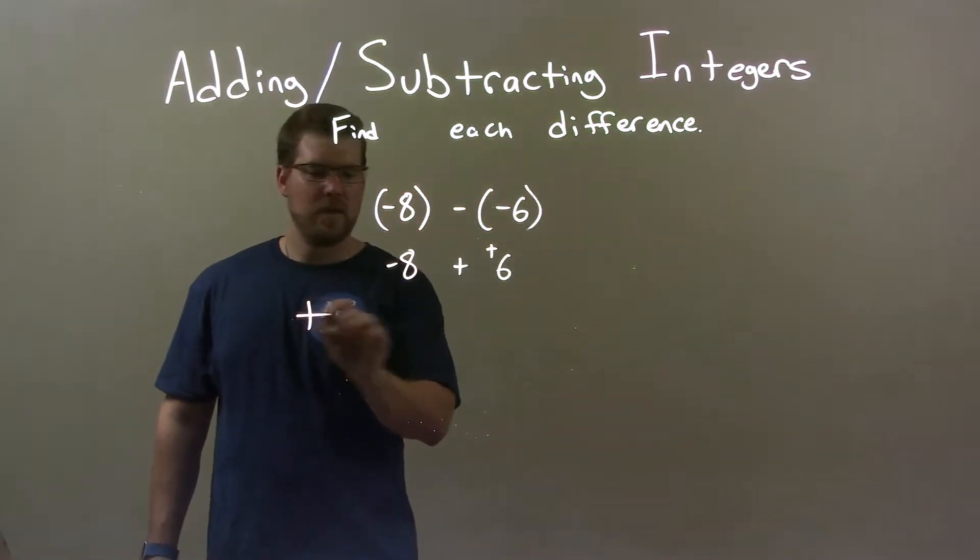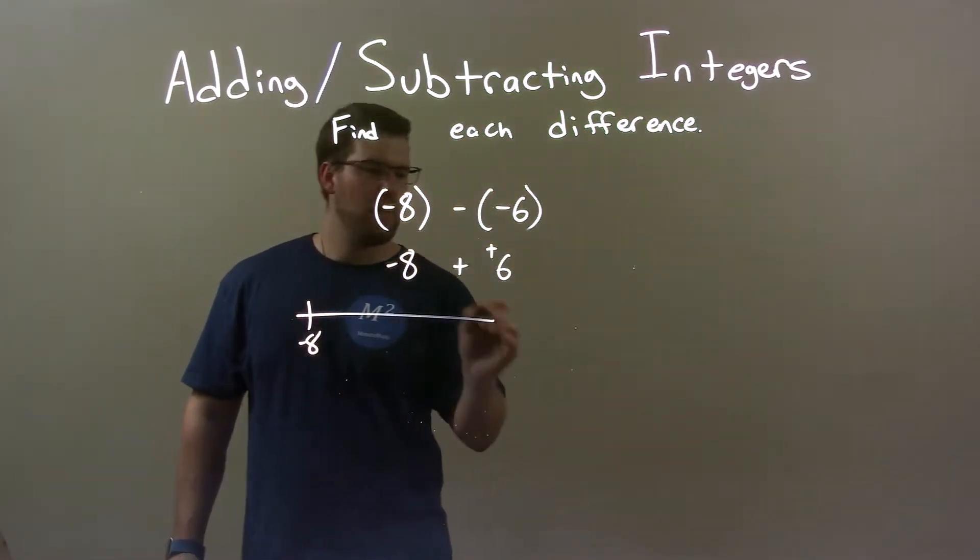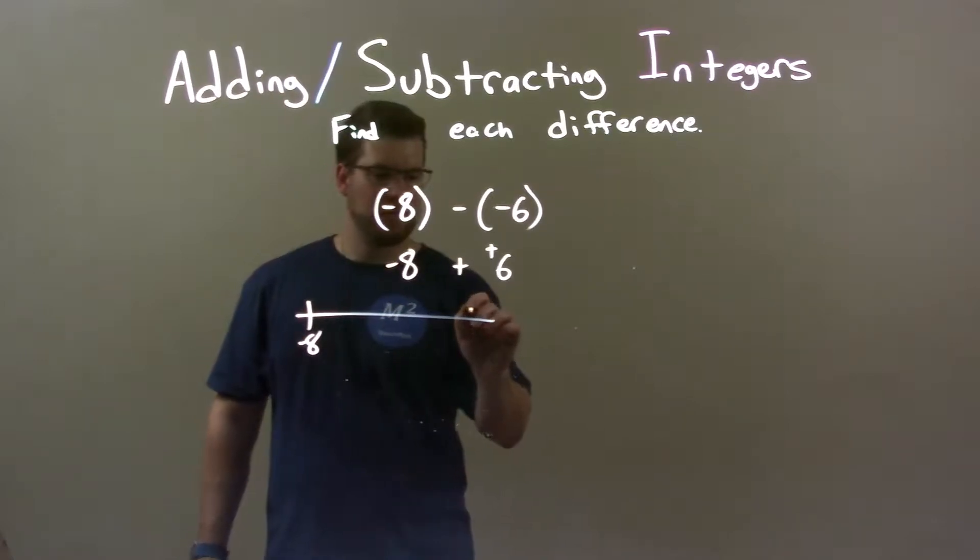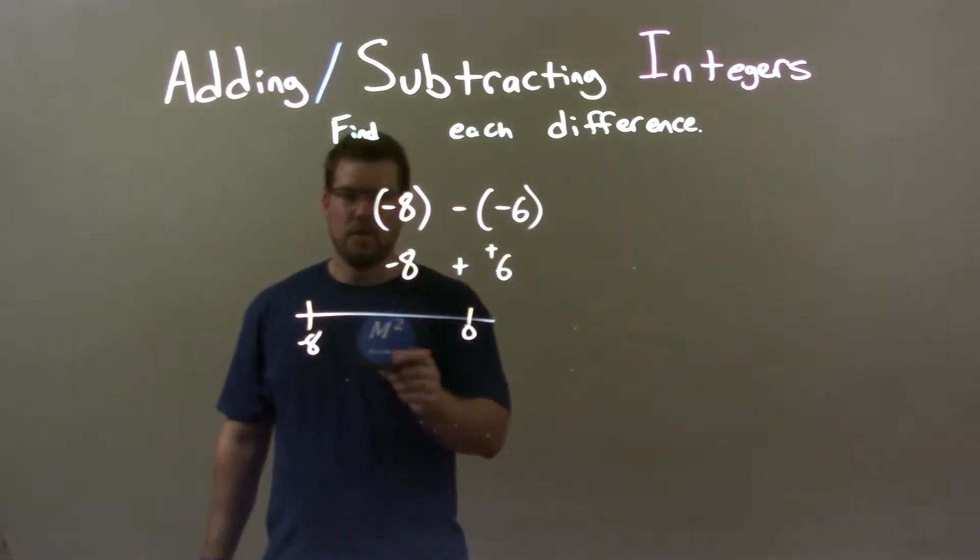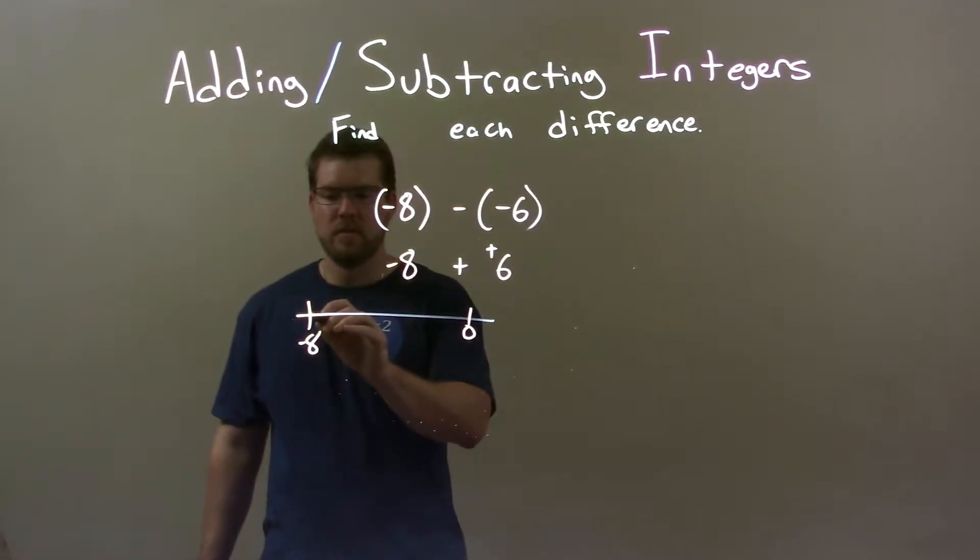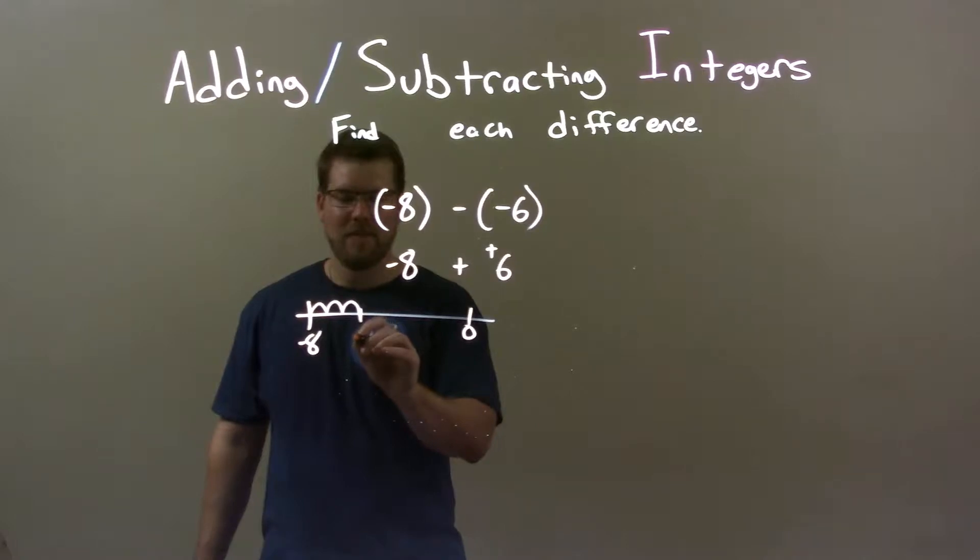Let's look at our number line. We start with negative 8 right here. And we're going to go in the positive direction, so let's say 0 is right here. If I go 3 units, 3 positive units, give me negative 7, negative 6, negative 5. So we have a negative 5 right there.